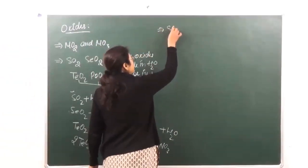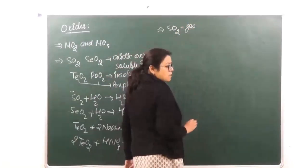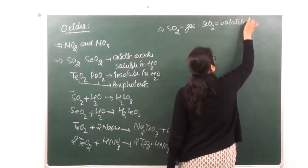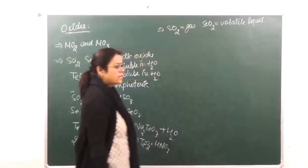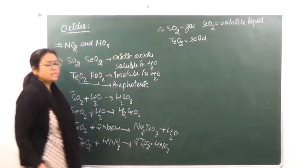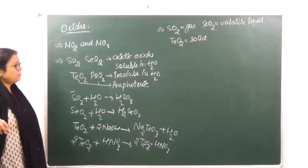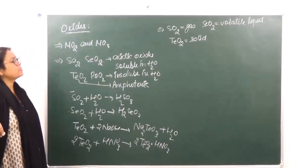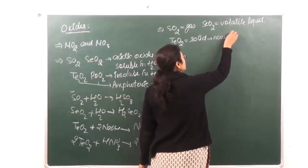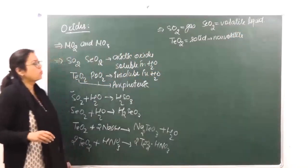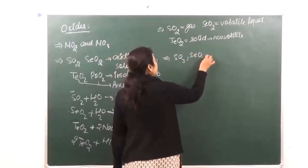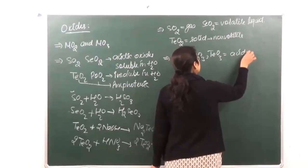When we are talking of sulfur dioxide, it exists as a gas because of pπ-pπ bonding present. Selenium dioxide exists as a volatile liquid. When we are talking of tellurium dioxide, it exists as a solid. The reason is that as we go down the group, the forces of attraction increase due to increase in atomic mass, and hence from gaseous state it goes to solid state. Tellurium dioxide forms a non-volatile solid. Moving on to trioxides — SO3, selenium trioxide, and tellurium trioxide — they all are acidic oxides.